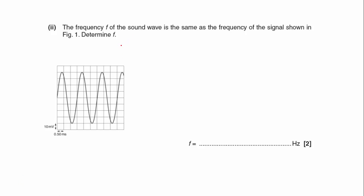Part two. The frequency F of the sound wave is the same as the frequency of the signal shown in figure one. Determine the frequency. What I need to know here is that the frequency is equal to one over the period of the wave. And the period is time for one complete cycle.